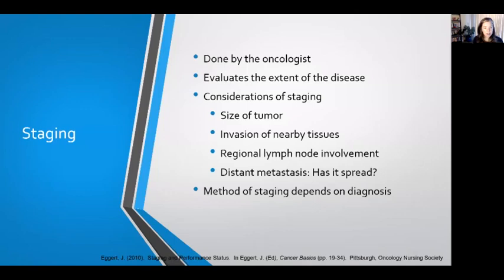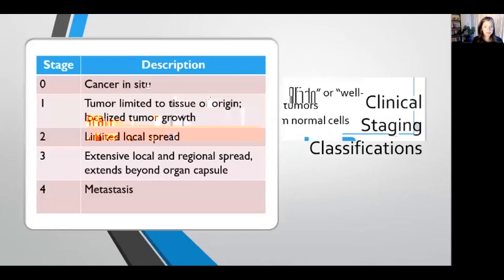After a tumor is graded, the oncologist will often do what is called staging. Staging evaluates the extent of disease and considers the size of the tumor, the invasion of nearby tissues, whether there is any lymph node involvement, and if it has spread anywhere throughout the body. There are several different ways to stage cancer depending on the type of cancer.